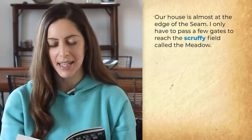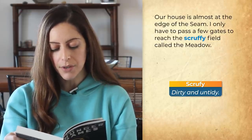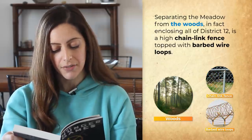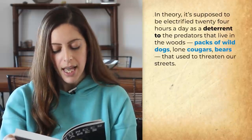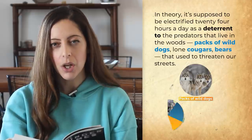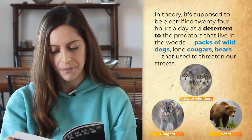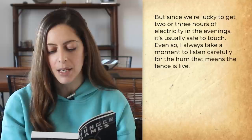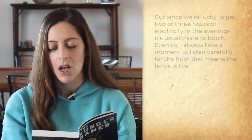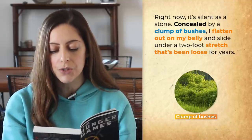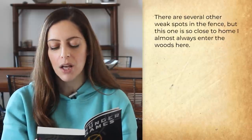Our house is almost at the edge of the Seam. I only have to pass a few gates to reach the scruffy field called the meadow. Separating the meadow from the woods, in fact enclosing all of District 12, is a high chain link fence topped with barbed wire loops. In theory it's supposed to be electrified 24 hours a day as a deterrent to the predators that live in the woods — packs of wild dogs, lone cougars, bears that used to threaten our streets. But since we're lucky to get two or three hours of electricity in the evenings, it's usually safe to touch. Even so, I always take a moment to listen carefully for the hum that means the fence is live. Right now it's silent as a stone. Concealed by a lump of bushes, I flatten out on my belly and slide under the two-foot stretch that's been loose for years. There are several other weak spots in the fence, but this one is so close to home I almost always enter the woods here.